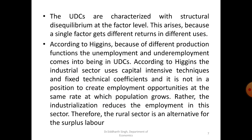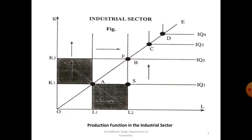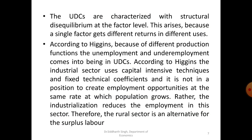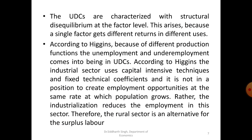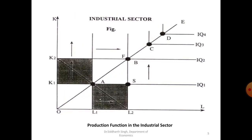According to Higgins, the industrial sector uses capital-intensive techniques and fixed technical coefficients, and it is not in a position to create employment opportunities at the same rate at which the population is growing. Rather, industrialization reduces employment in this sector. Therefore, the rural sector is an alternative for the surplus labor present in the industrial sector — as seen in the graphical representation, where L1 to L2 is the surplus labor not absorbed in the industrial sector, but which can be absorbed in the rural sector.